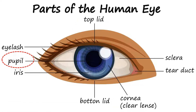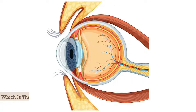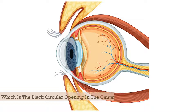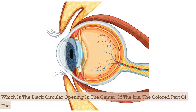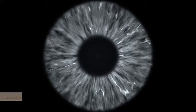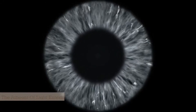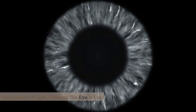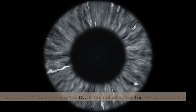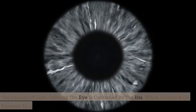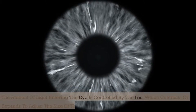The cornea bends or refracts the light as it enters the eye, and the light then passes through the pupil, which is the black circular opening in the center of the iris, the colored part of the eye. The amount of light entering the eye is controlled by the iris, which contracts or expands to adjust the size of the pupil.